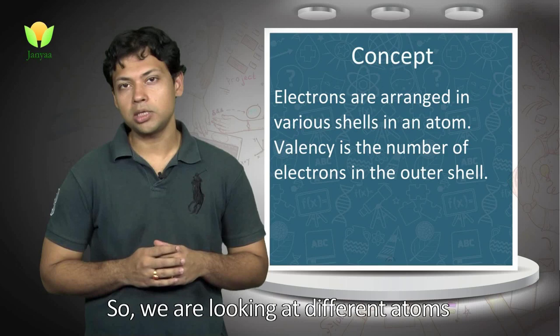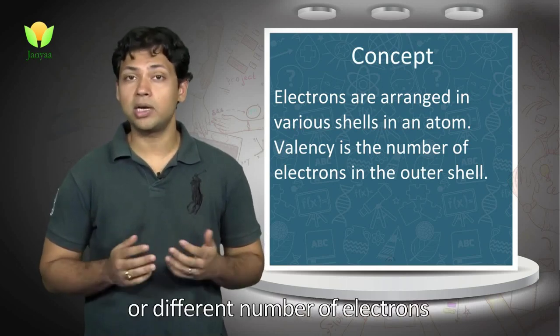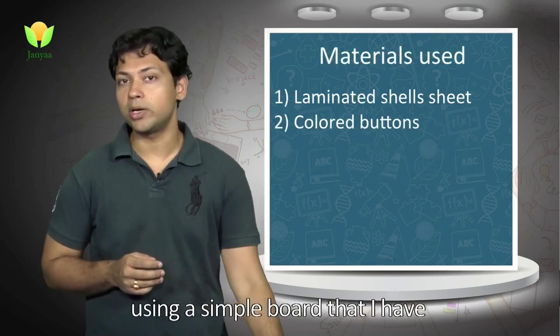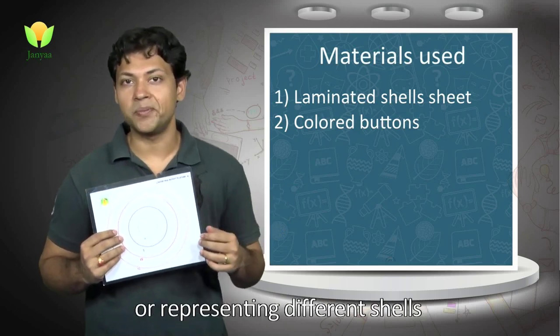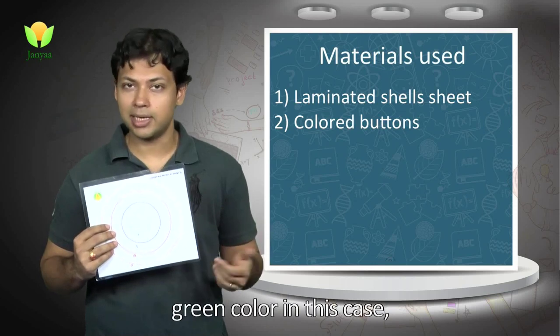We are looking at different atoms with different valencies or different numbers of electrons, and we'll try to arrange it using a simple board that I have which constitutes different shells representing different shells. And then we'll try to play with colored buttons that I have—green color in this case.